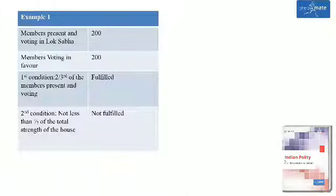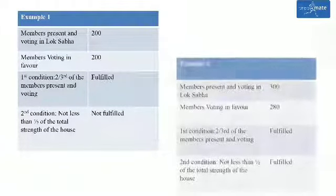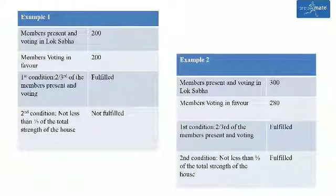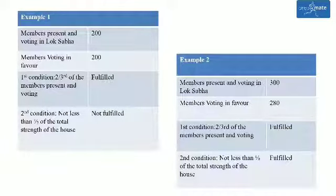Let us take another example. Suppose 300 members are present in Lok Sabha and 280 members vote in favour of passing the resolution. In this case, more than two-third of the members present and voting vote in favour of passing the resolution. Also, the strength of the members voting in favour of the resolution is not less than half of the total strength of the house, that is 273. Thus, the resolution stands passed.